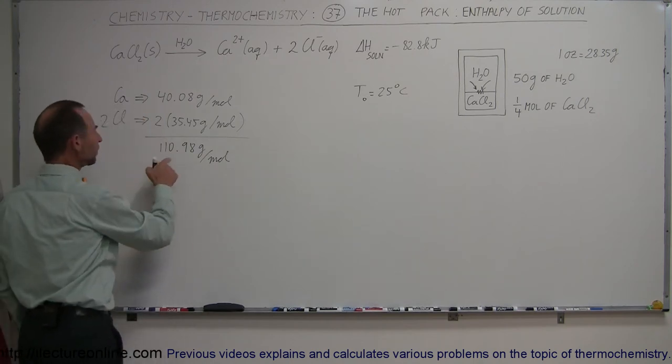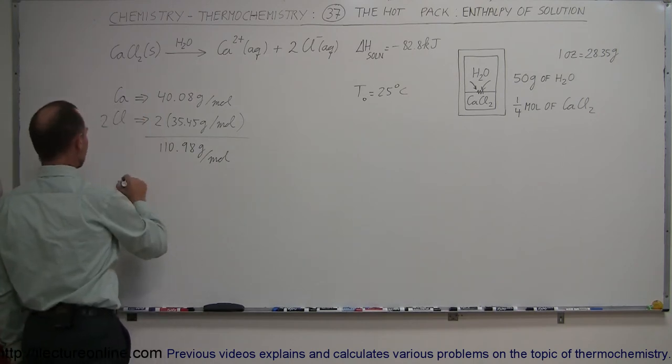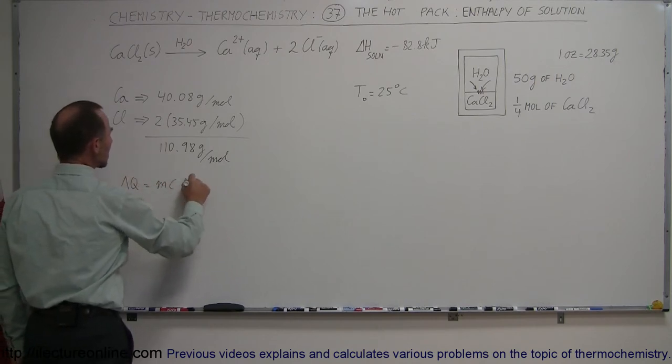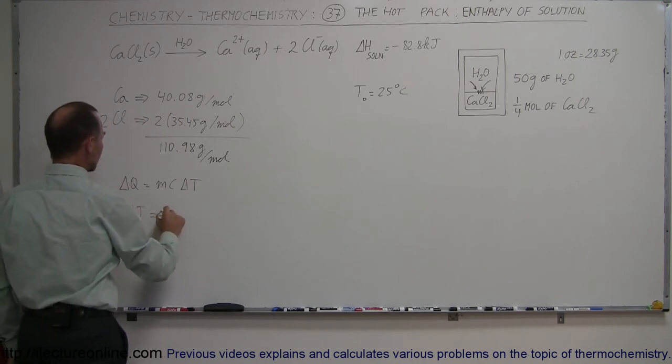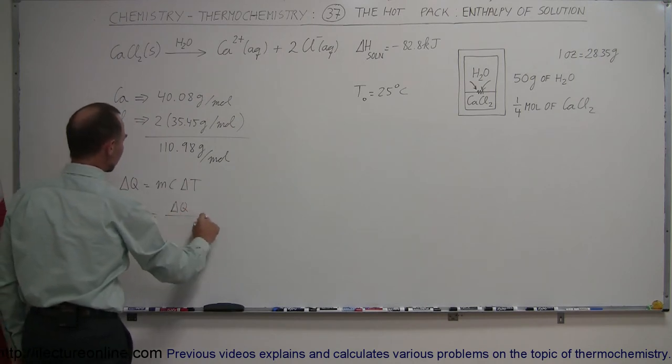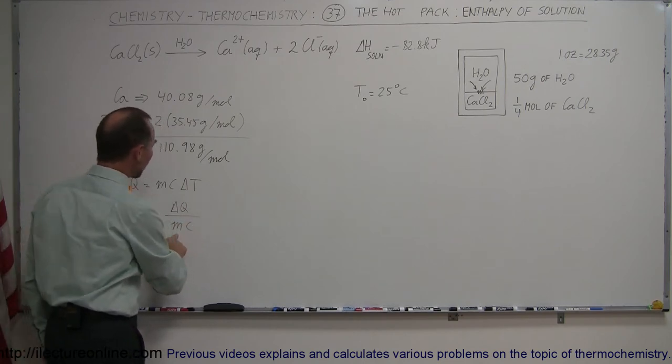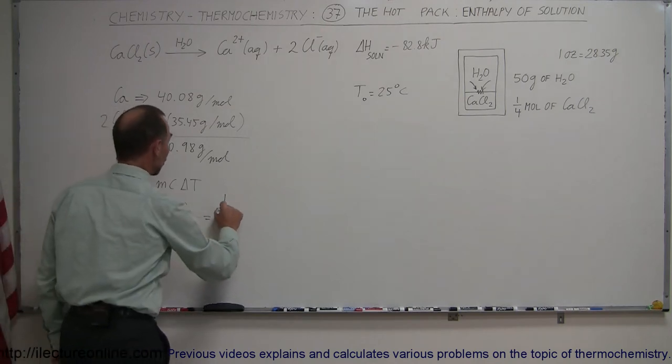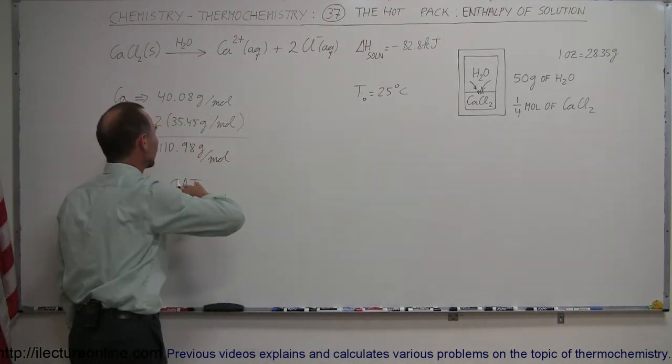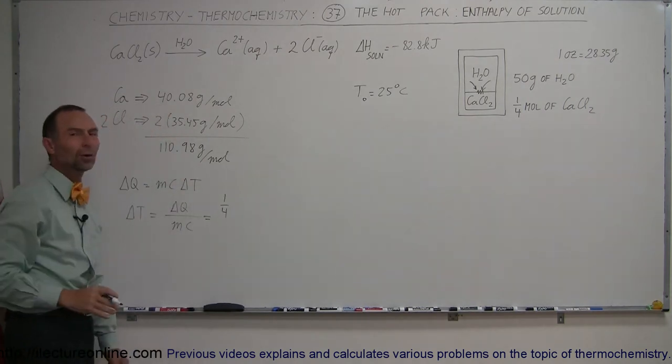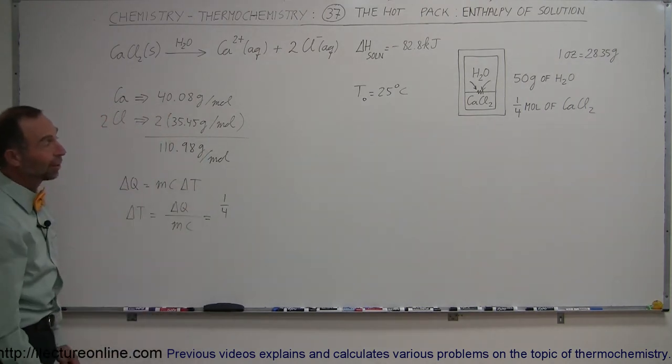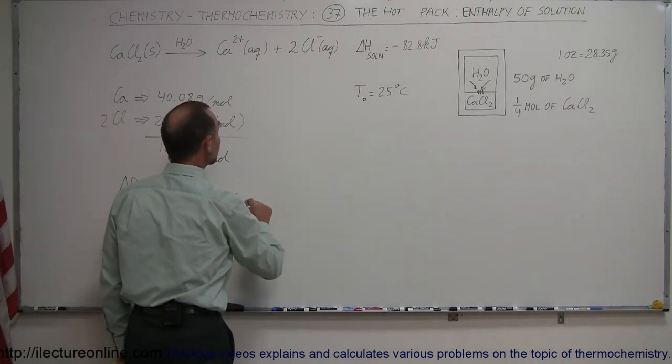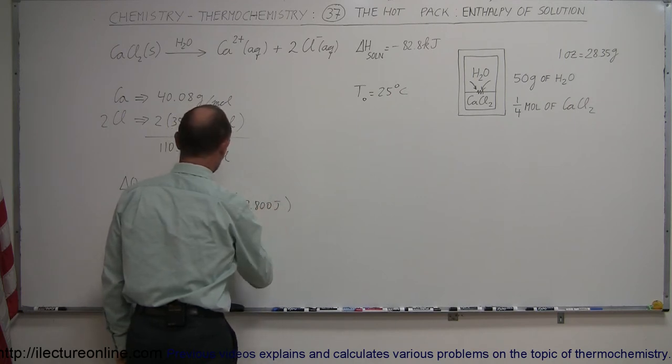We have delta Q is equal to mc delta T. In other words, the change in the temperature is going to be equal to the heat released by the reaction divided by the mass of the water and the specific heat of water. So the delta Q here is going to be one quarter, because we only have one quarter of a mole of this calcium chloride. Turns out I probably didn't even need to know the molar mass of calcium chloride because we were just told it was one quarter of a mole. So one quarter of the heat released, which is 82,800 joules.